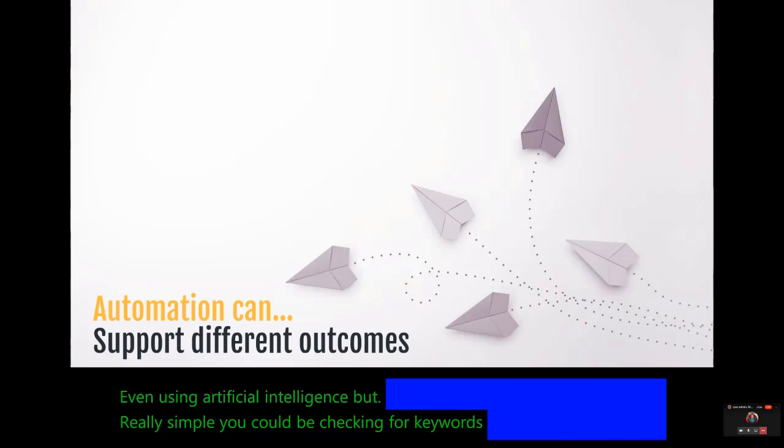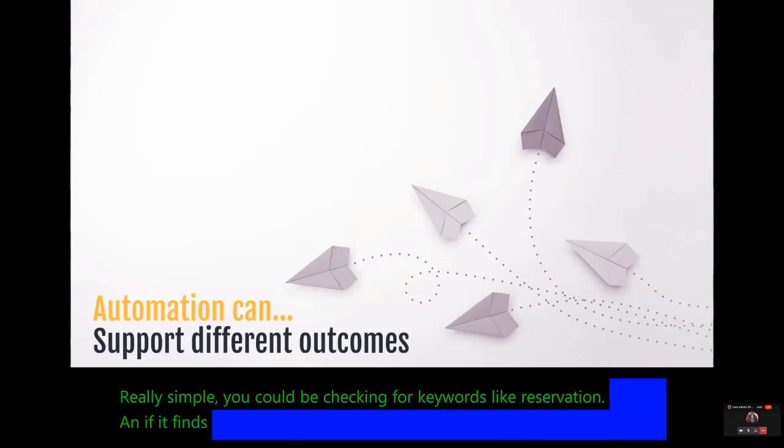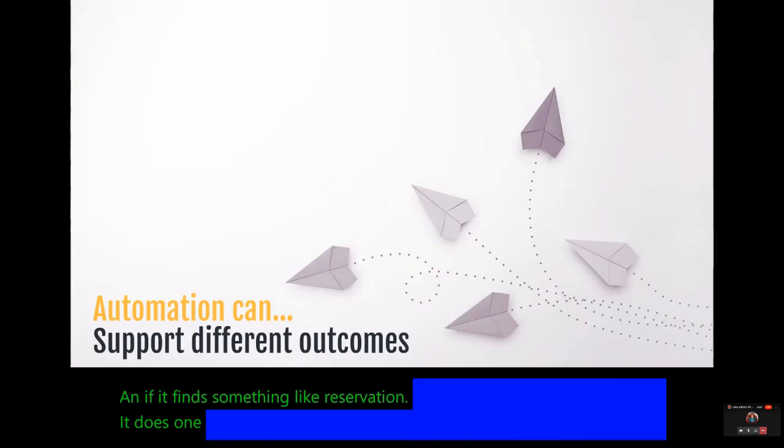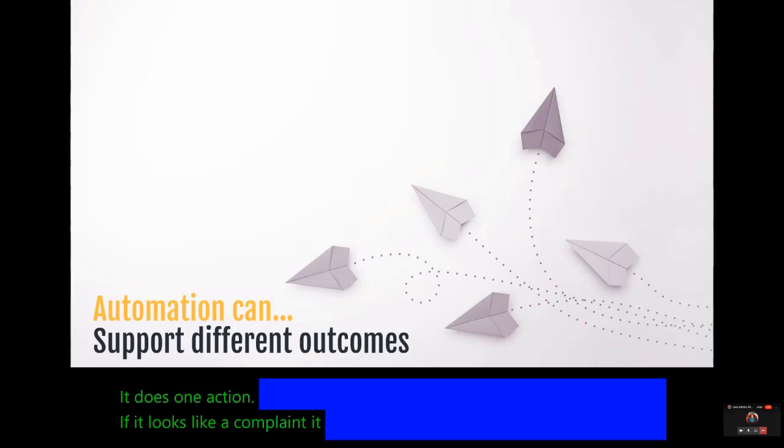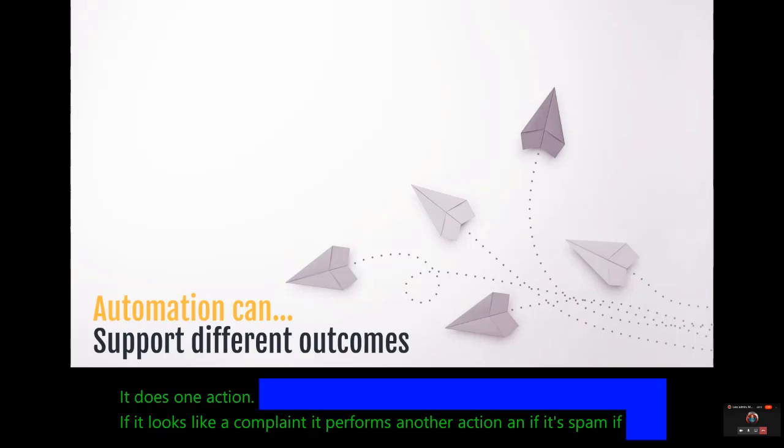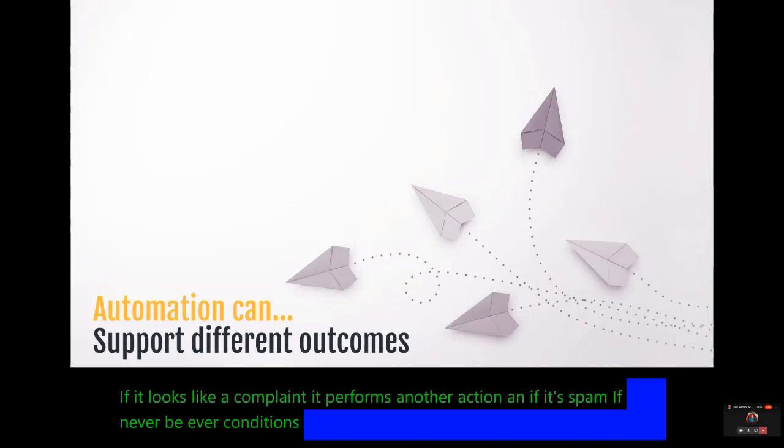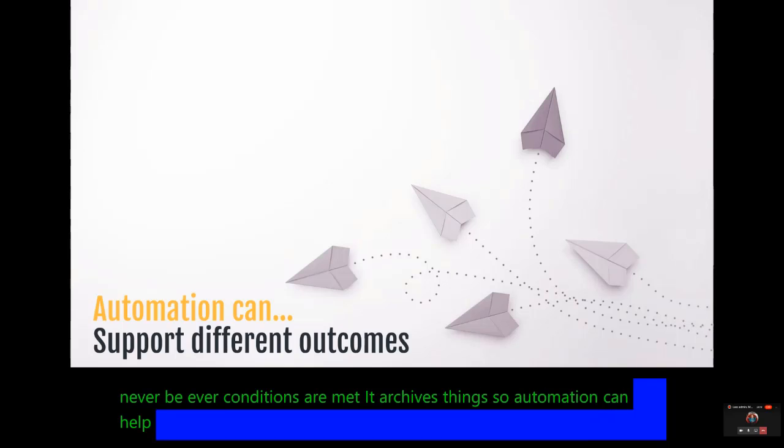And if it finds something like reservation, it does one action. If it looks like a complaint, it performs another action. And if it's spam, if neither of the other conditions are met, it archives things. So automation can help you reflect real business process that has multiple outcomes.